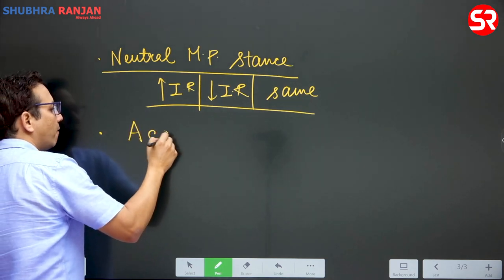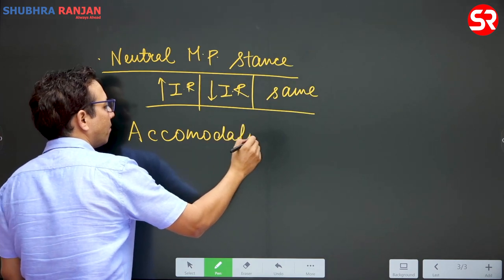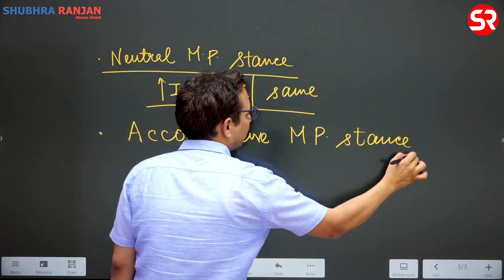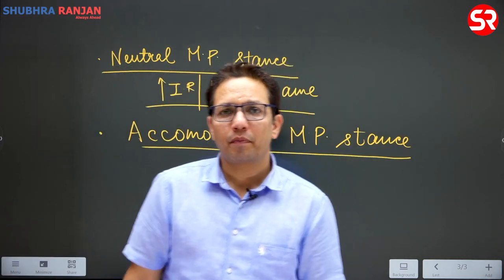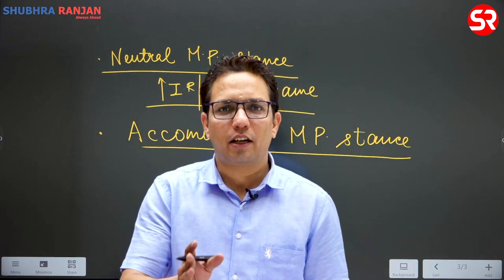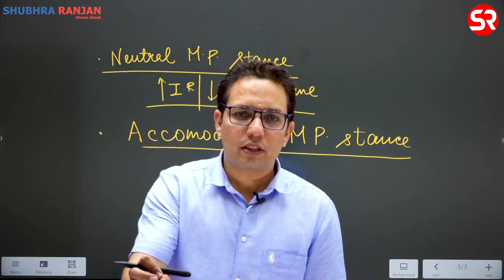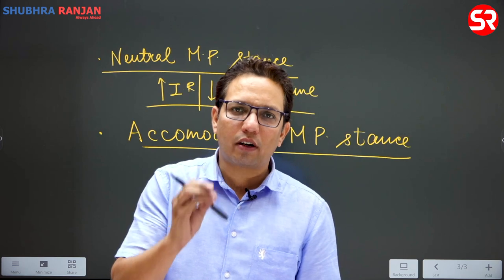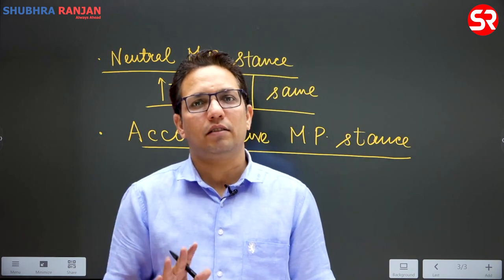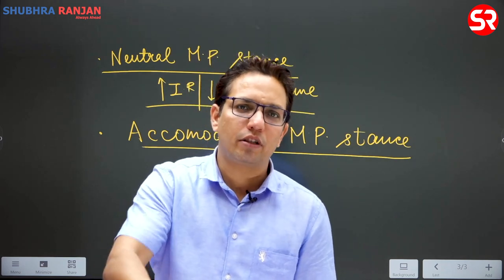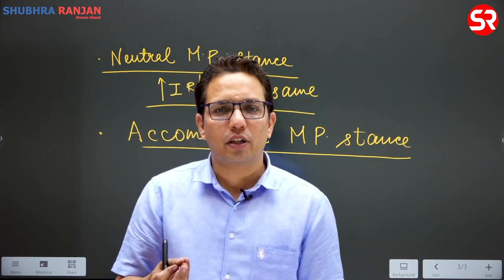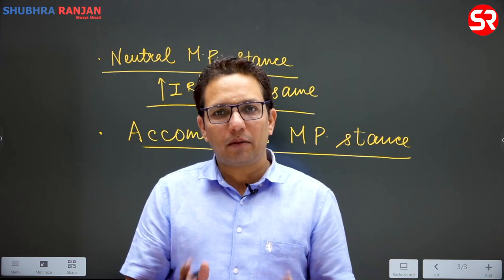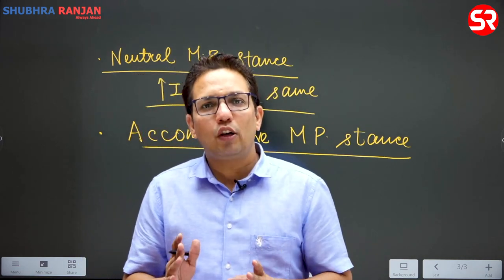Fourth is accommodative monetary policy stance. Imagine you are sitting in a classroom and your friend wants your chair. You have no option but to accommodate your friend — you become uncomfortable, but you prioritize the friendship over your comfort. Similarly, in accommodative monetary policy stance, even if there is some inflation, RBI prioritizes growth over inflation control.